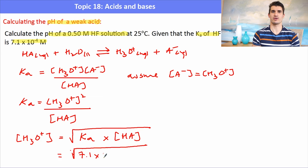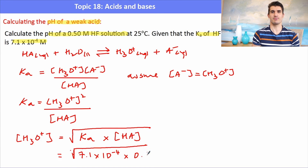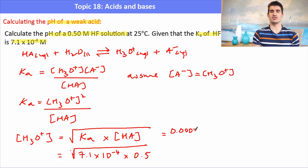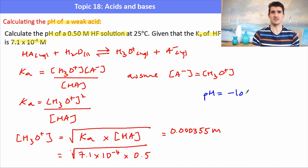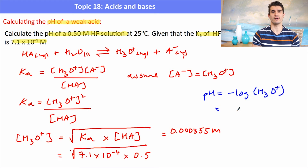That gives us our hydrogen ion concentration, which will be fairly low. We then use the formula pH = −log₁₀[H+] to calculate the pH of the solution, which gives us pH = 3.45.